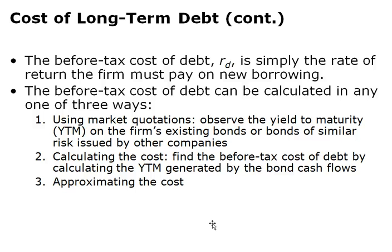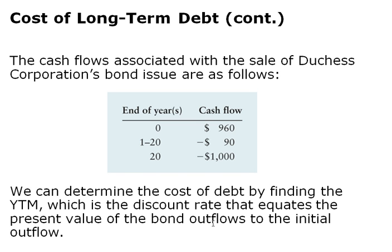The before-tax cost of debt, R_D, is simply the rate of return the firm must pay for new borrowing. It can be calculated three ways: using the market quotation or yield to maturity (YTM), calculating the cost directly, or approximating it. The bond's cash flows are: in year zero, the net proceeds received; in years one through 20, interest payments; and in year 20, the $1,000 par value paid back. The cost of debt is found by finding the YTM—the discount rate that equates the present value of outflows to the initial inflow.